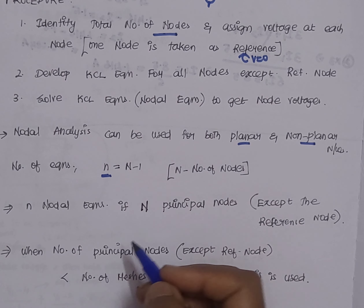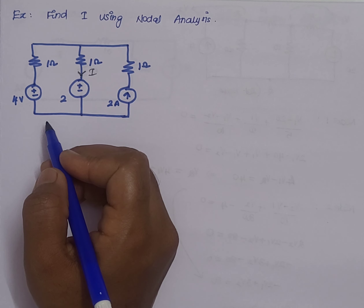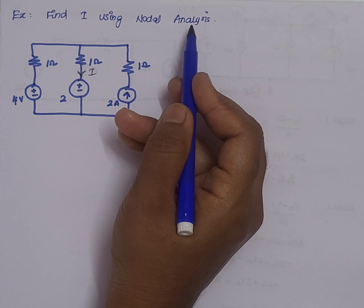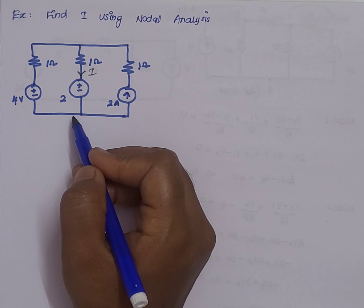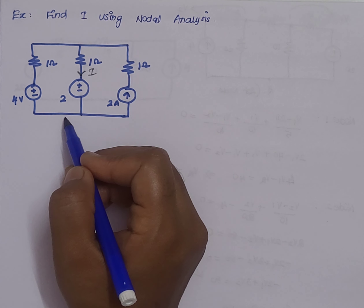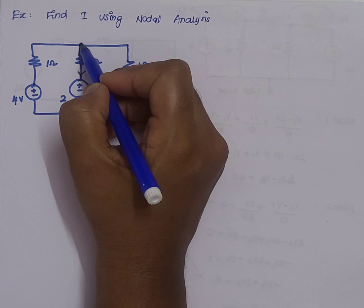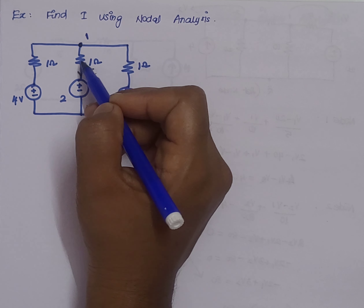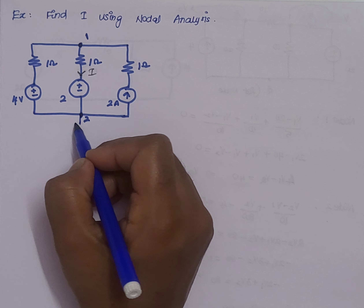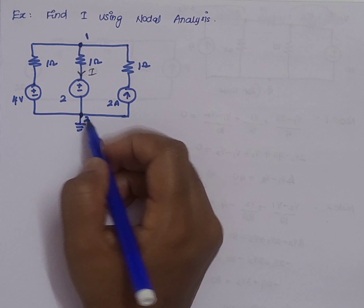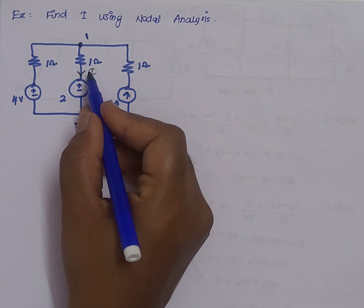Now let us see some problems to apply all this procedure for better understanding. The first question is to find the current using nodal analysis. In this circuit, we apply all the theoretical procedures we have seen. The first step is to identify the total number of nodes. There is one node where three elements meet, and a second node which is taken as the reference since voltage at that point equals zero.